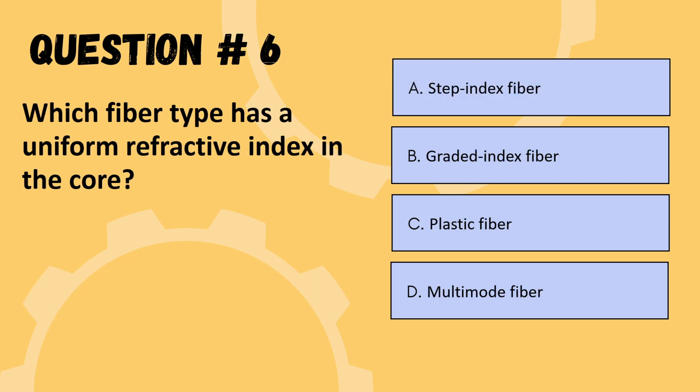Next question: which fiber type has a uniform refractive index in the core? Options are step index fiber, graded index fiber, plastic fiber, or multi-mode fiber. The correct option is A: step index fiber.